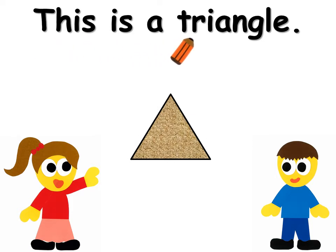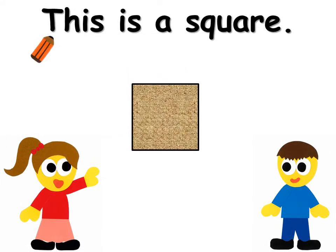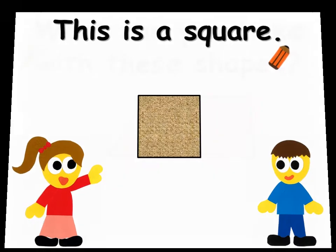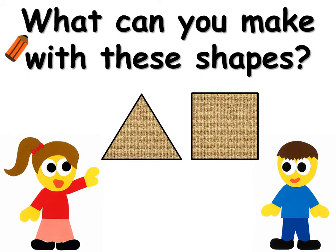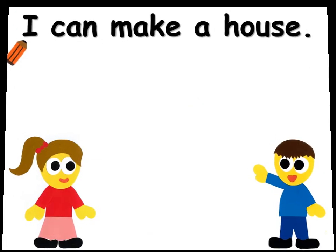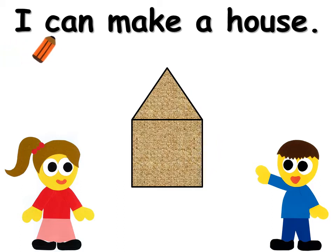This is a triangle. This is a square. What can you make with these shapes? I can make a house.